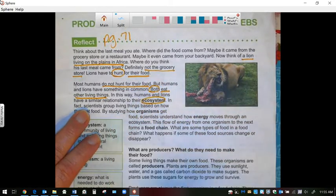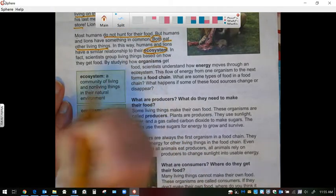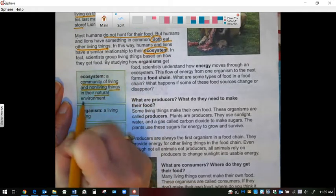Let's look at the definition of an ecosystem. An ecosystem is a community of living and non-living things in their natural environment.